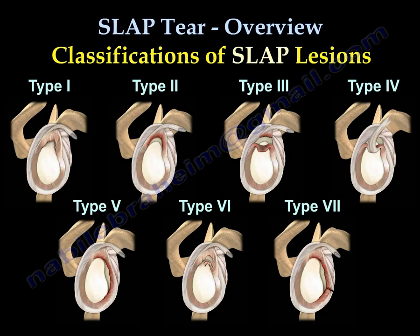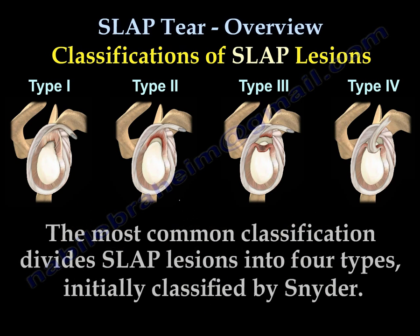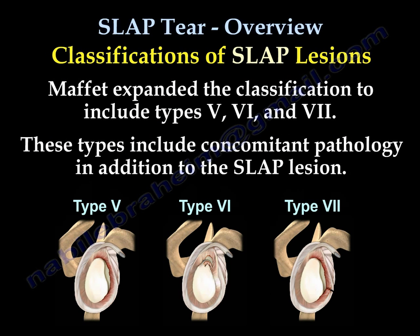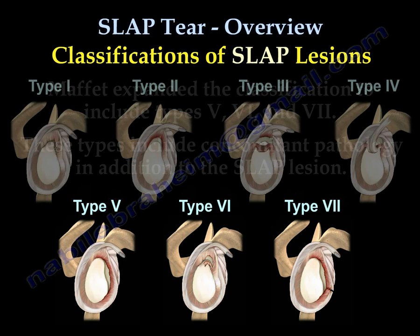Classifications of SLAP lesions. The most common classification divides SLAP lesions into four types, initially classified by Snyder. Maffet expanded the classification to include types 5, 6, and 7. These additional types include concomitant pathology in addition to the SLAP lesion.